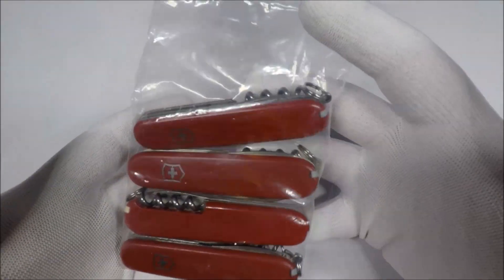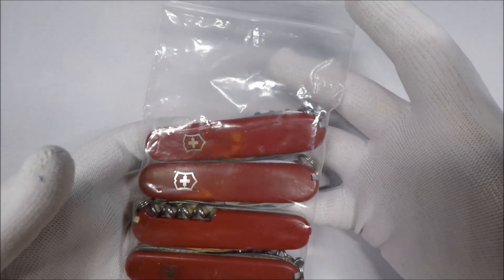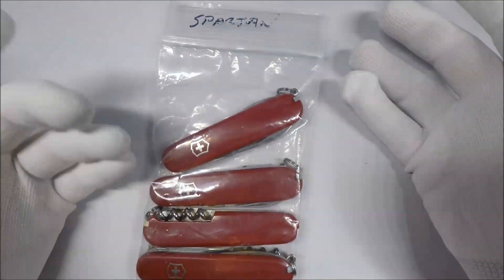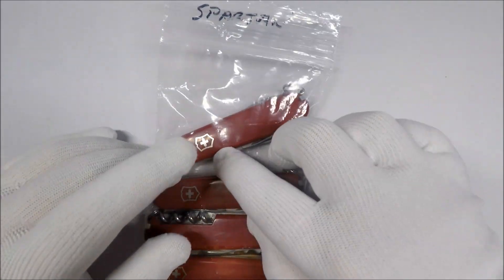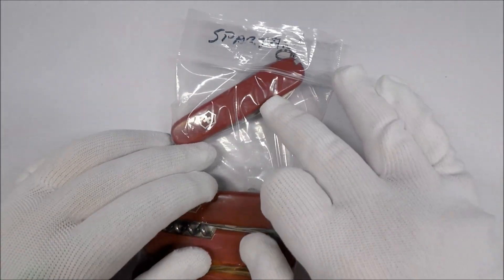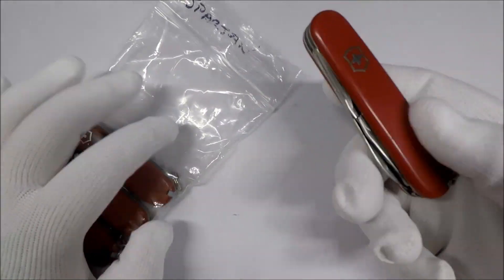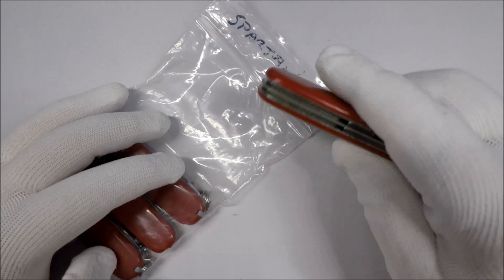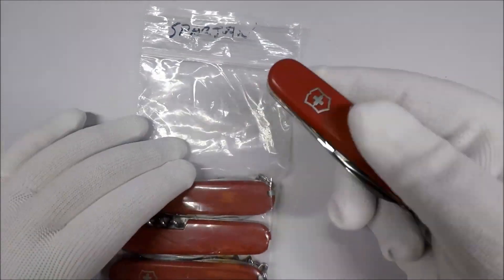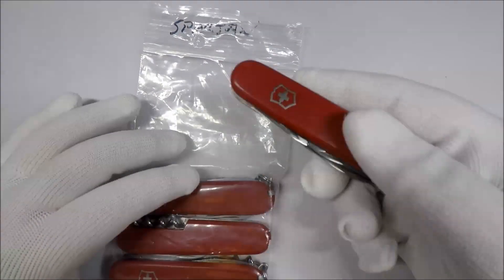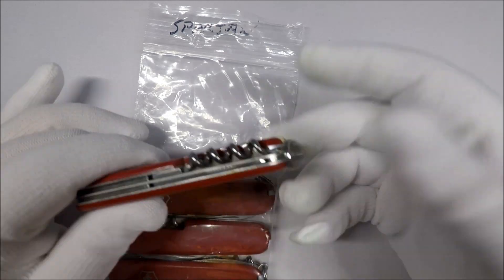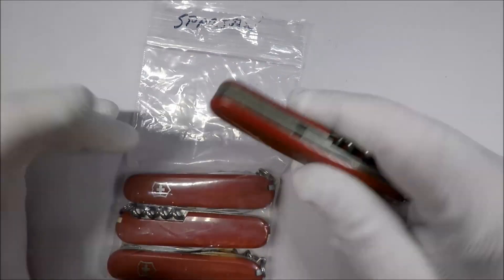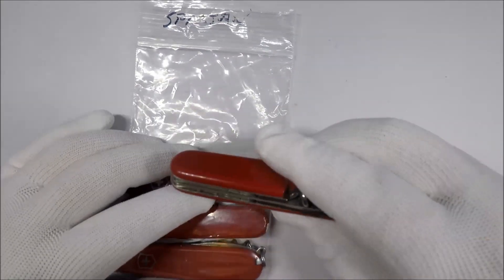Now the reason I have these in the bag is I wanted to try replacing the scales on Swiss Army knives. I had some knives I wanted to replace the scales on, so I figured I'd get some to test out. I found an auction with five Spartans and five Climbers for like $35, so 10 Swiss Army knives to experiment on for $35. I figured it's worth the shot.